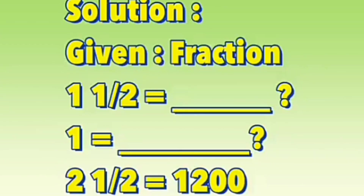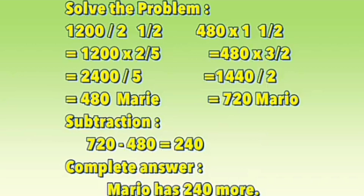We have to write two columns — one for the fraction and one for the amount. The given fraction for Mario is one and a half, and the whole number one is for Marie. We add the fractions for a total of two and a half. The total amount is 1200, and we are going to find the one and a half share of Mario and the one whole share of Marie.